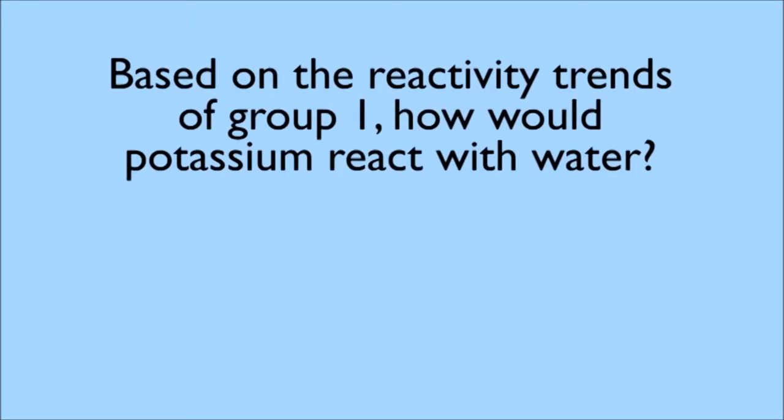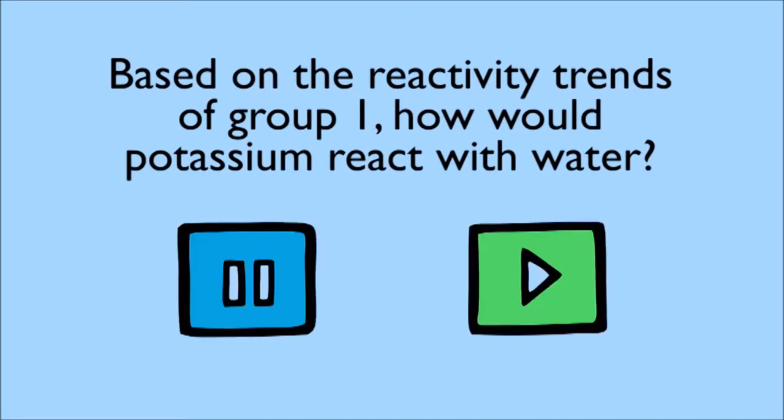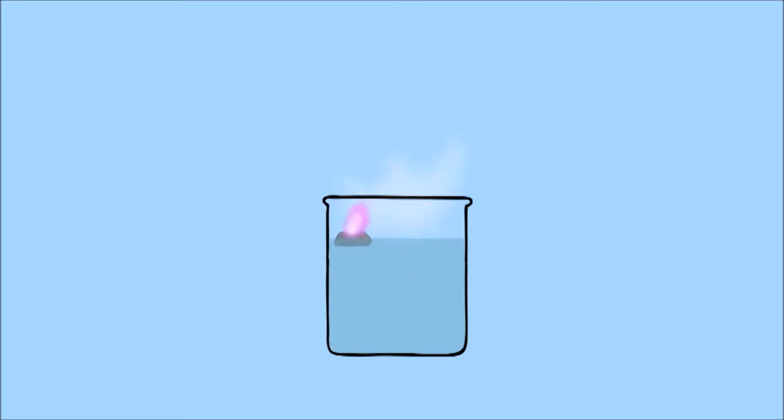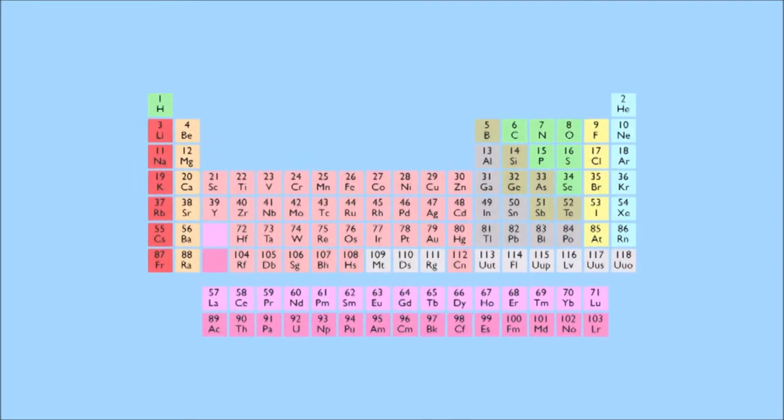If you know the reactivity trend of this group, react potassium metal with water. Pause the video and consider, then resume. Well, the chemical equation looks nearly the same, but the reaction is much more violent because potassium is more reactive, and enough heat is given out to ignite the hydrogen gas, and this then ignites the metal itself.